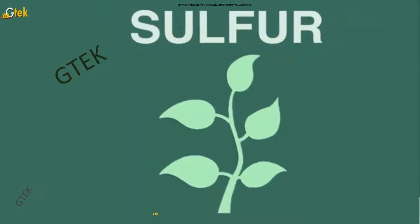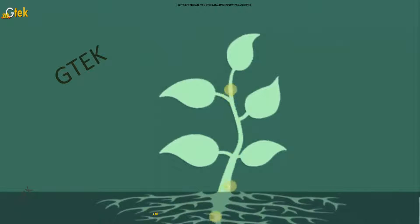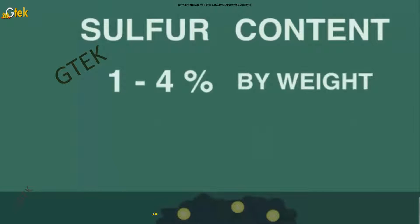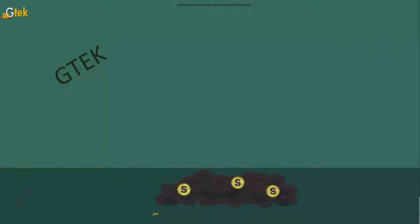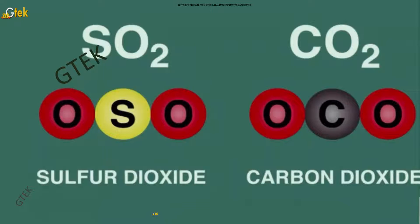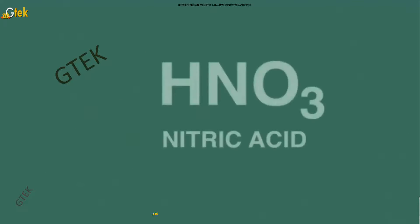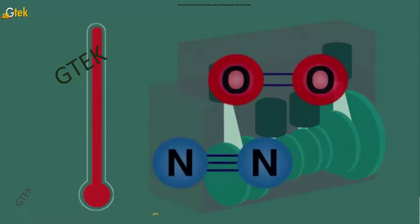Sulfuric acid is one of the worst contributors. It becomes sulfates and is deposited as potassium sulfate in the soil, which reacts with leaves, causing them to decay and the trees to die. The sulfur content spoils the leaves. Sulfur reacts with oxygen to form sulfur dioxide; sulfur dioxide further reacts with oxygen to form sulfur trioxide, and with water it forms sulfuric acid. Nitric acid is also highly acidic and is emitted from vehicles.